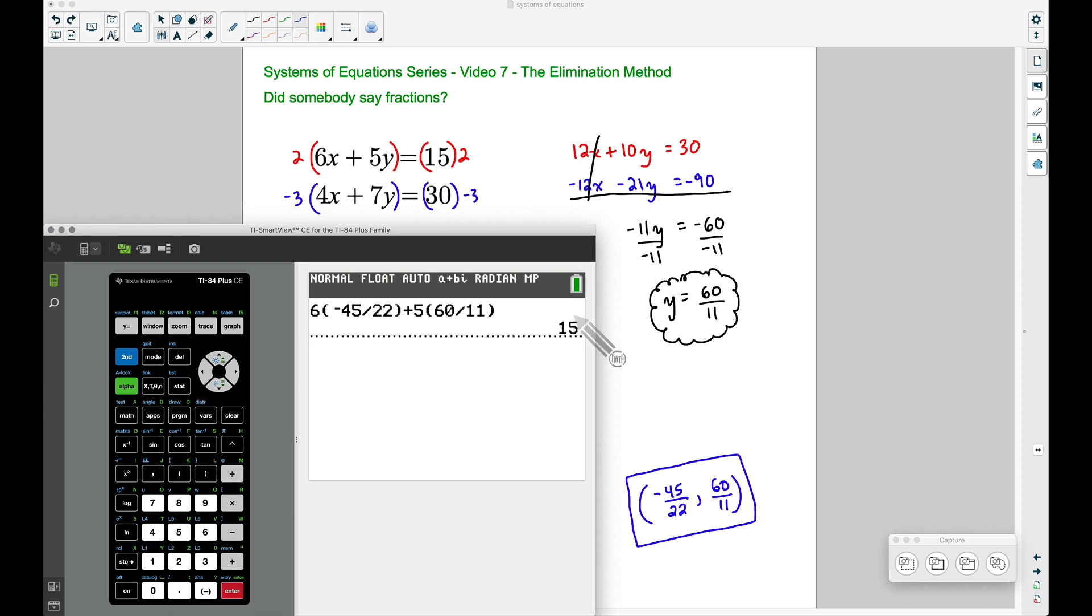And here I've typed in that first equation up here: 6 times x, so that's 6 times that x value that we got a moment ago, plus 5y, so plus 5 times the y value. And notice we do get 15. Fantastic! And then lastly I've taken this second equation, 4x plus 7y, and check out what we get: we get 30.